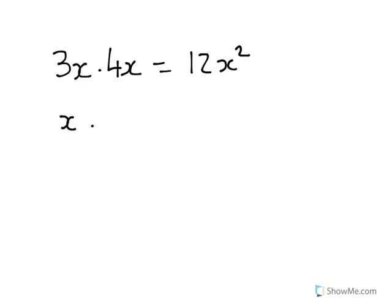Whereas x times 4y, how would we do that? There's a 1 in front here. We look at the numbers that we multiply together first. 1 times 4 is 4. x times y is xy.